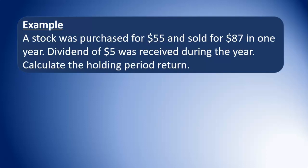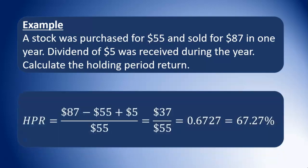We're going to calculate the holding period return. So: the selling price, $87, minus the purchase price, $55, plus the dividend of $5, all divided by $55. That gives us 0.6727, which multiplied by 100 gives us 67.27% — so approximately a 67% return on this investment.